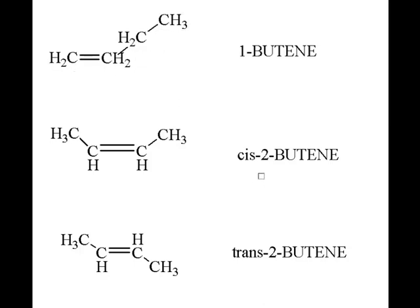This next compound is a 2-butene because the double bond starts on the second carbon. Likewise with this third compound, this is also a 2-butene because the double bond starts on the number two carbon. Now the difference between the second compound and this third compound is the way the ends of the chain are oriented in space.